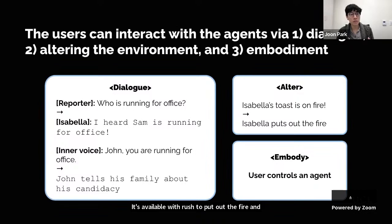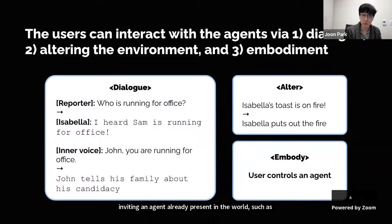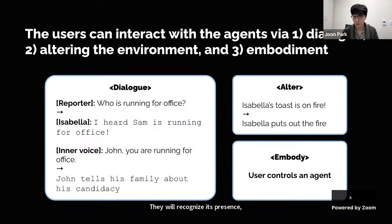Finally, the user can control an agent by embodying one already present in the world, such as Isabella or John, or join as an outside visitor. The inhabitants of Smallville will treat the user-controlled agent no differently than they treat each other — they will recognize its presence, initiate interactions, and remember its behavior before forming opinions about it.